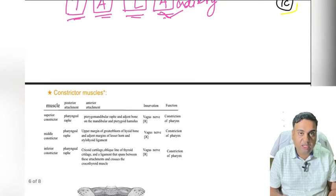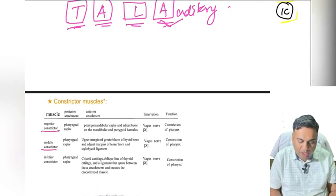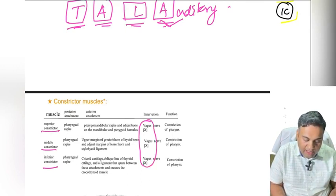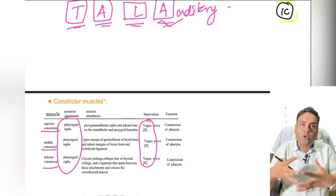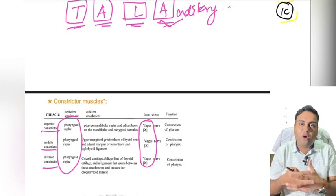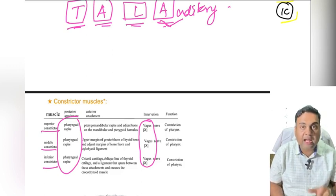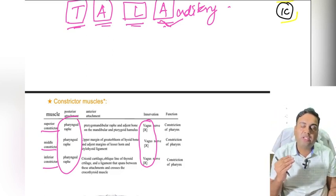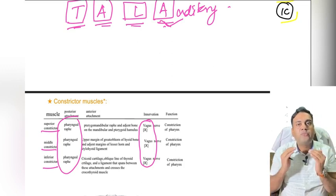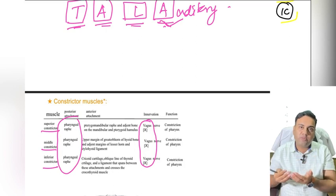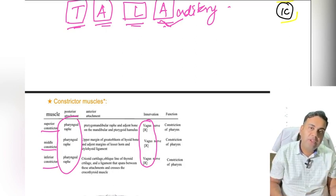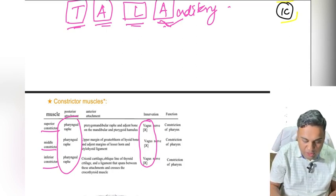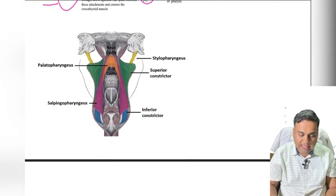To summarize the constrictors: superior constrictor originates from the skull base (sphenoid) and mandible; middle constrictor from the hyoid bone; inferior constrictor from the thyroid and cricoid cartilages. All insert into the midline pharyngeal raphe/aponeurosis. Nerve supply for all three is the vagus nerve.